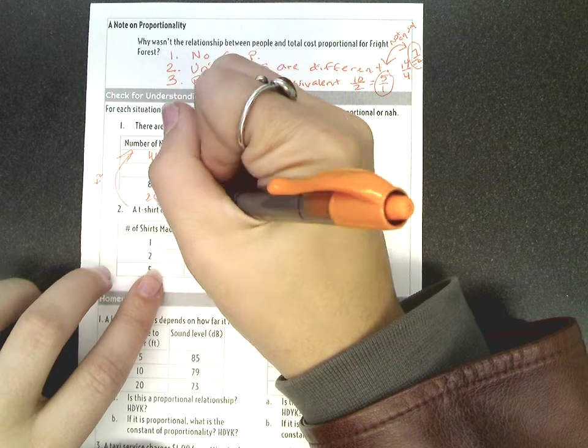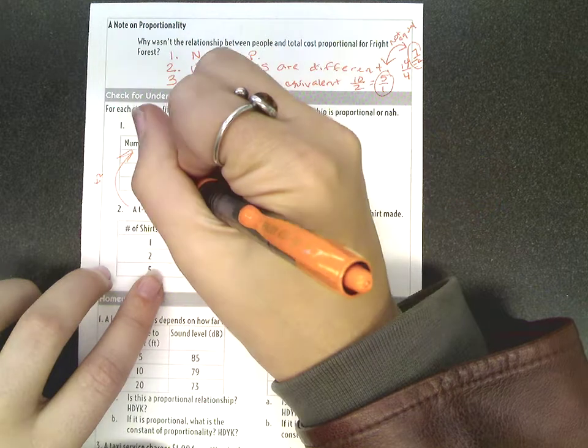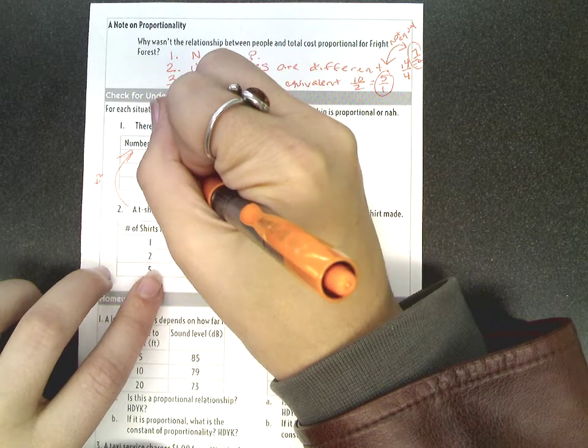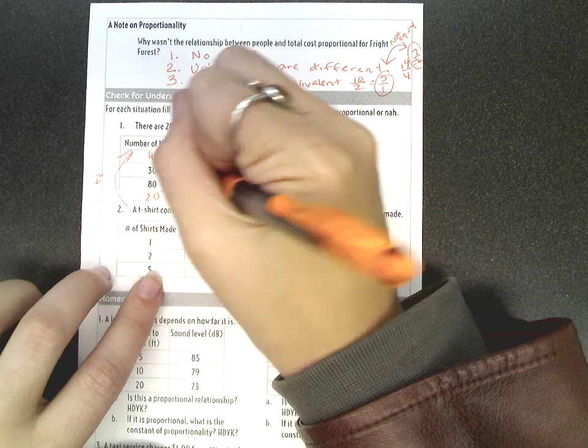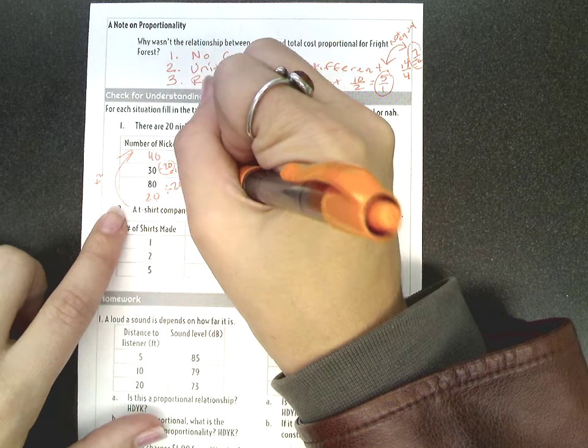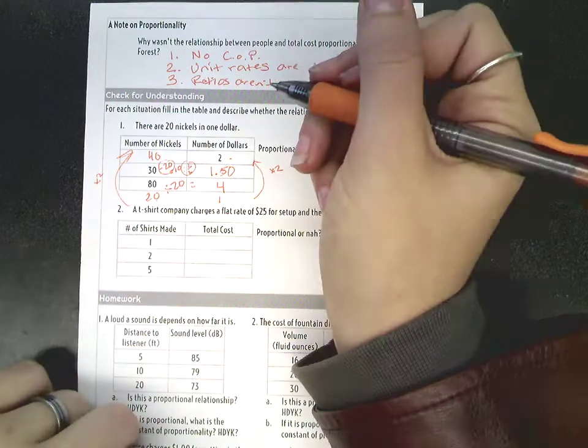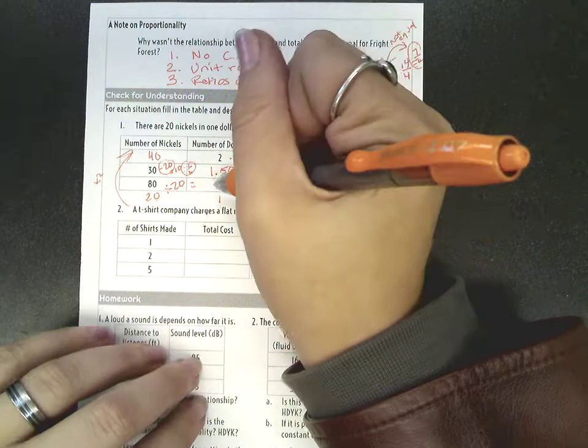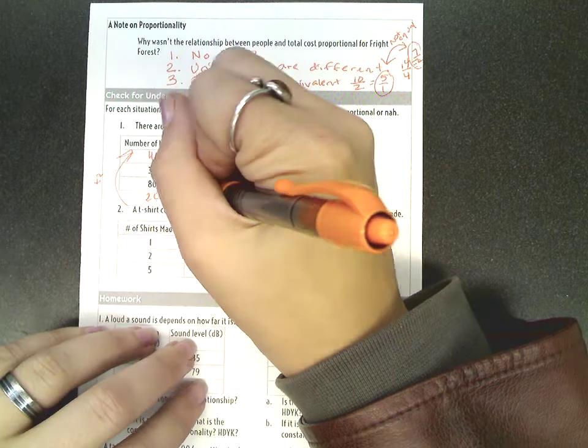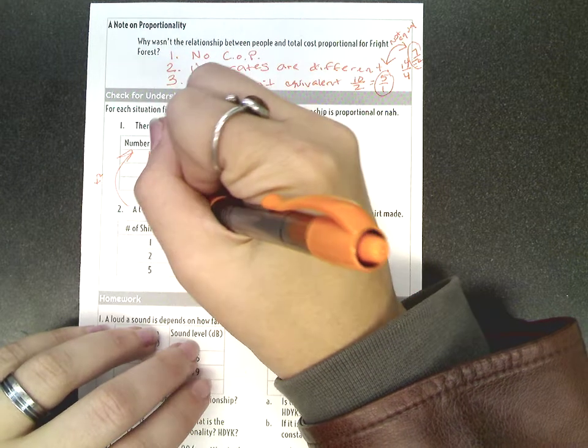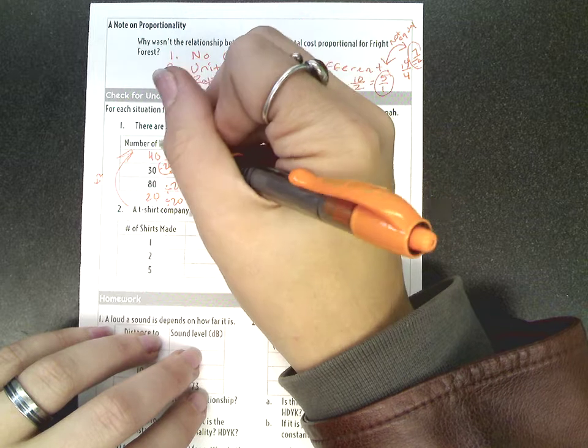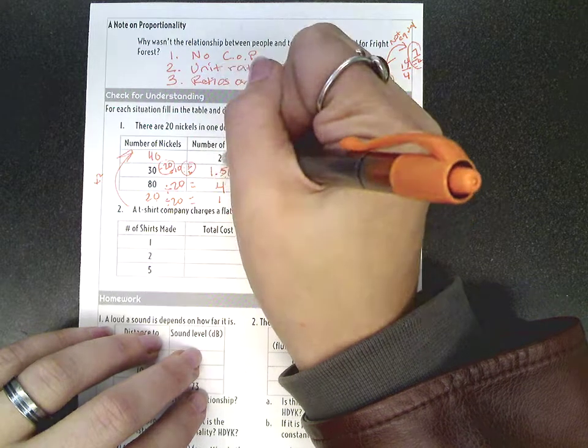30. Well, 20 is going to be $1. So minus 20, that leaves me with 10, which would be half a dollar. So I could say that I have $1.5 or $1.50, one and a half dollars. Now looking at this, is there a constant of proportionality? Well, if I do 80 divided by 20, I get 4. 20 divided by 20 would give me 1. 30 divided by 20 is 1.5. And 40 divided by 20 is 2.